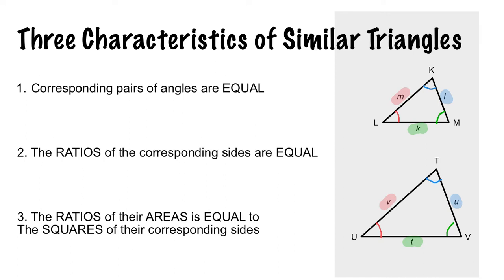The last rule is that the ratios of their areas is equal to the squares of the corresponding sides. So if we call this area X and this area Y, then X compared to Y would equal the squares of the corresponding sides. When you're dealing with shapes, the vertices are capital letters and the side lengths are small.